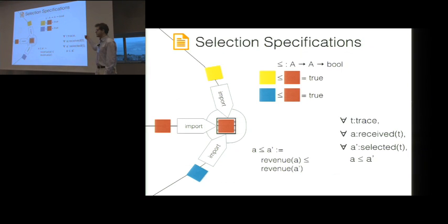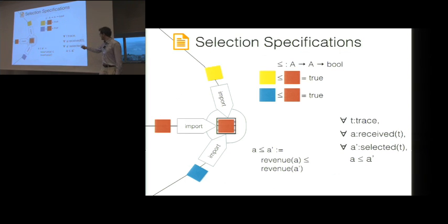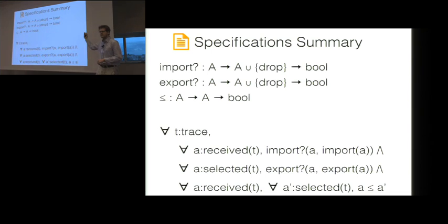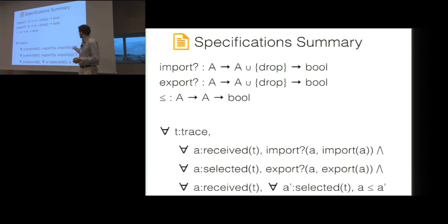In summary, there are three specifications: import, export, and the selection specification. Formally, this means that for every trace of the network, the selected announcement must be greater than any of the received announcements. This formula captures what it means for all three specifications to be true.